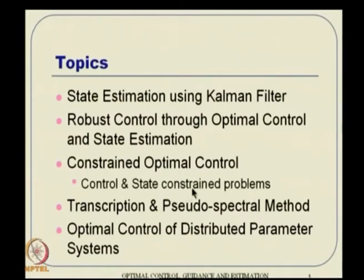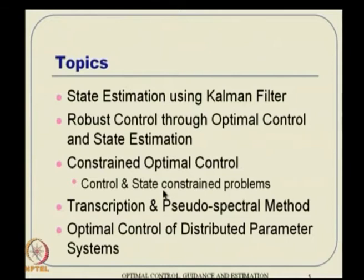We cannot forget the huge branch of constrained optimal control. Whatever solution we want need not be constrained only by state dynamics or system dynamics — it can also contain inequality constraints on control and state. For example, the control can be bounded between certain values, and those bounds, as well as state bounds, can be incorporated in the formulation.